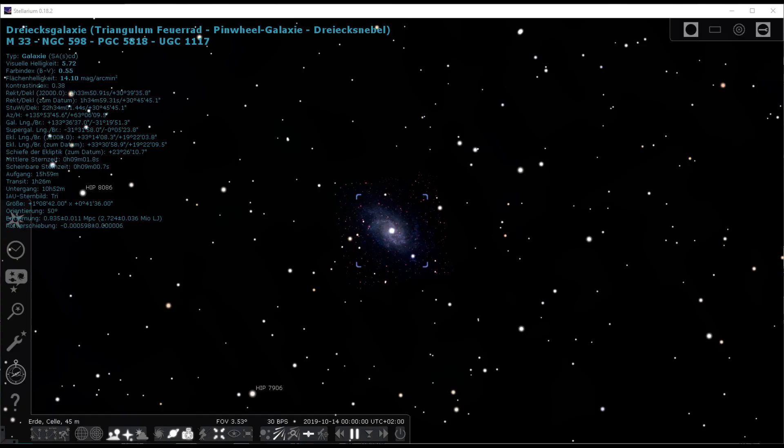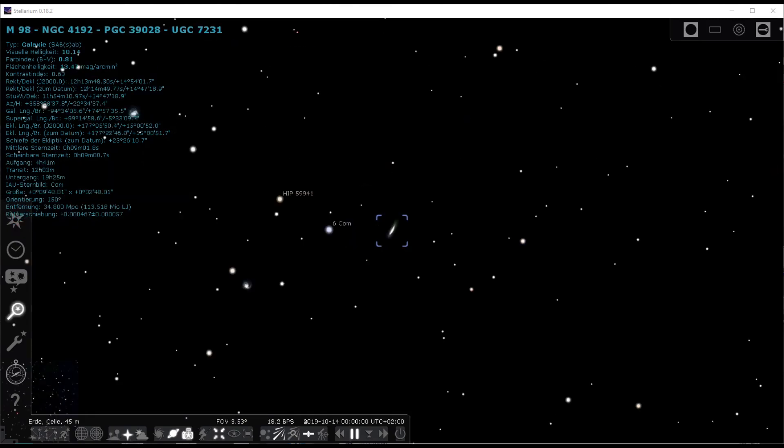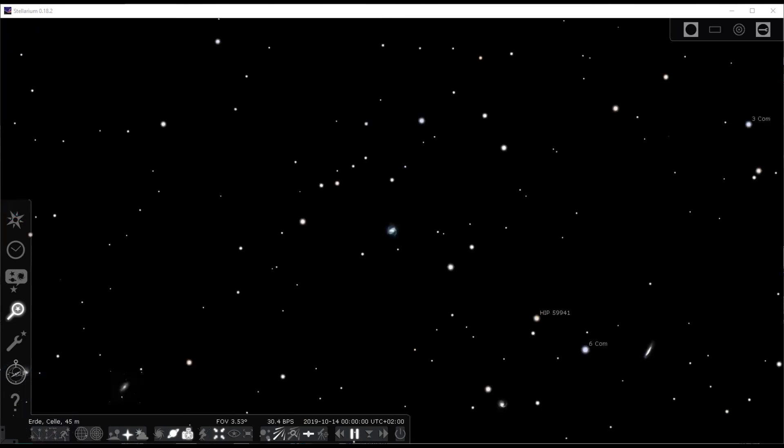Other galaxies are medium sized. M33 or M101 taking nearly one full moon in comparison. And others seem to be just tiny, M98 or others. To fetch details on them your scope must be rather long.